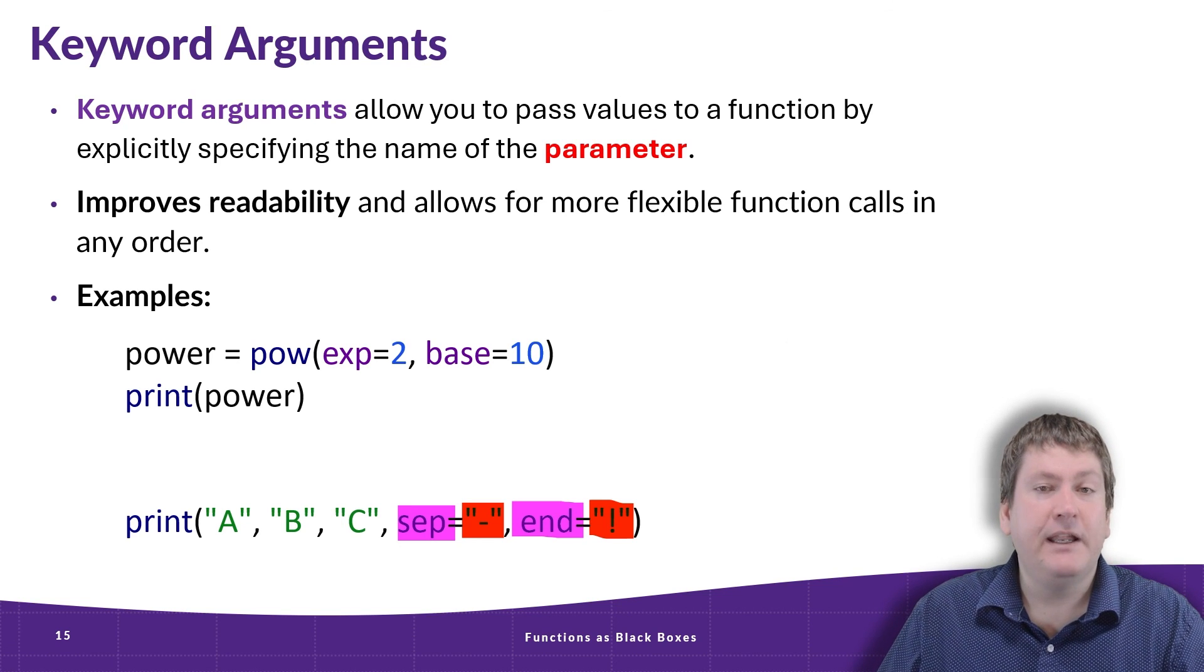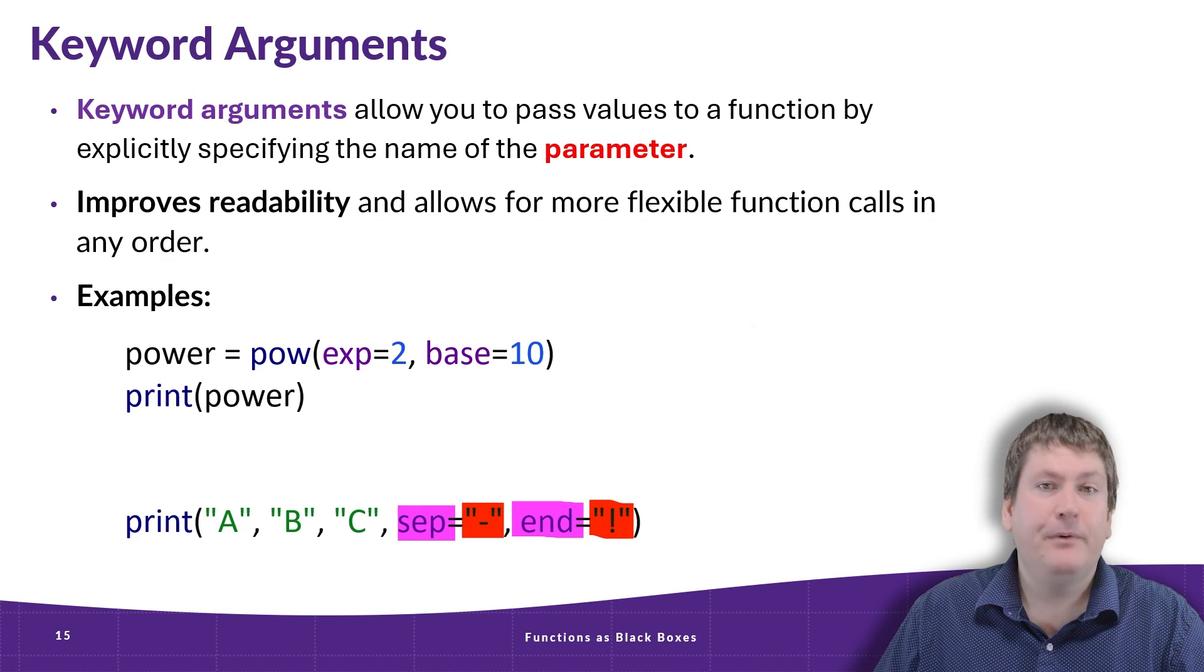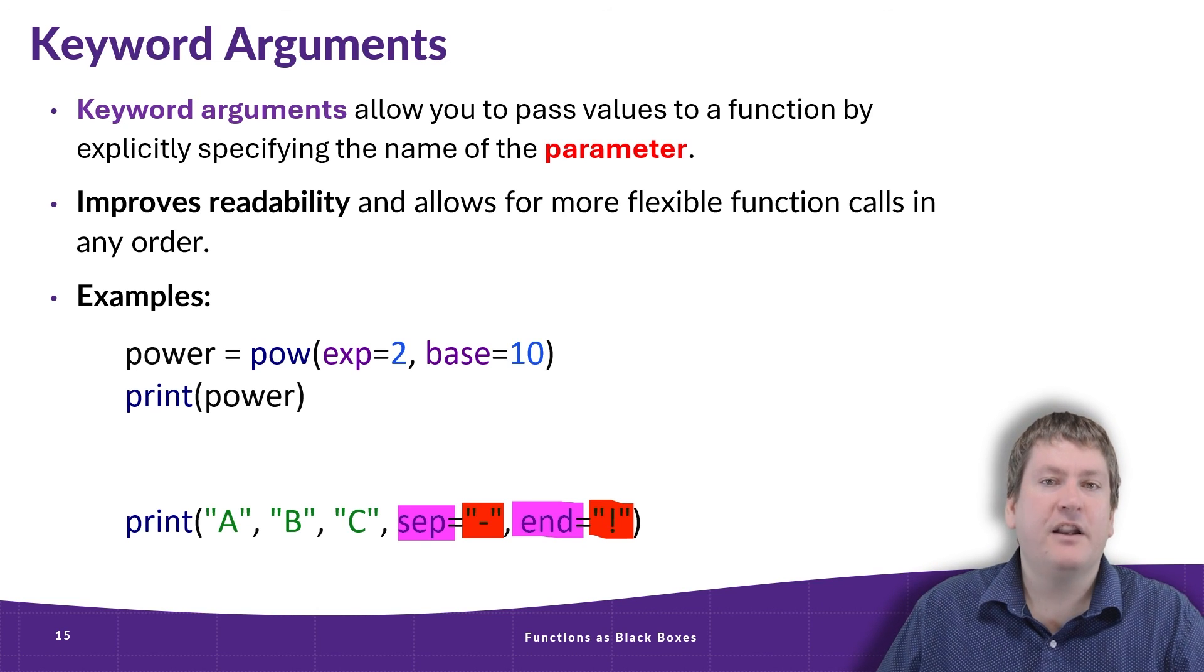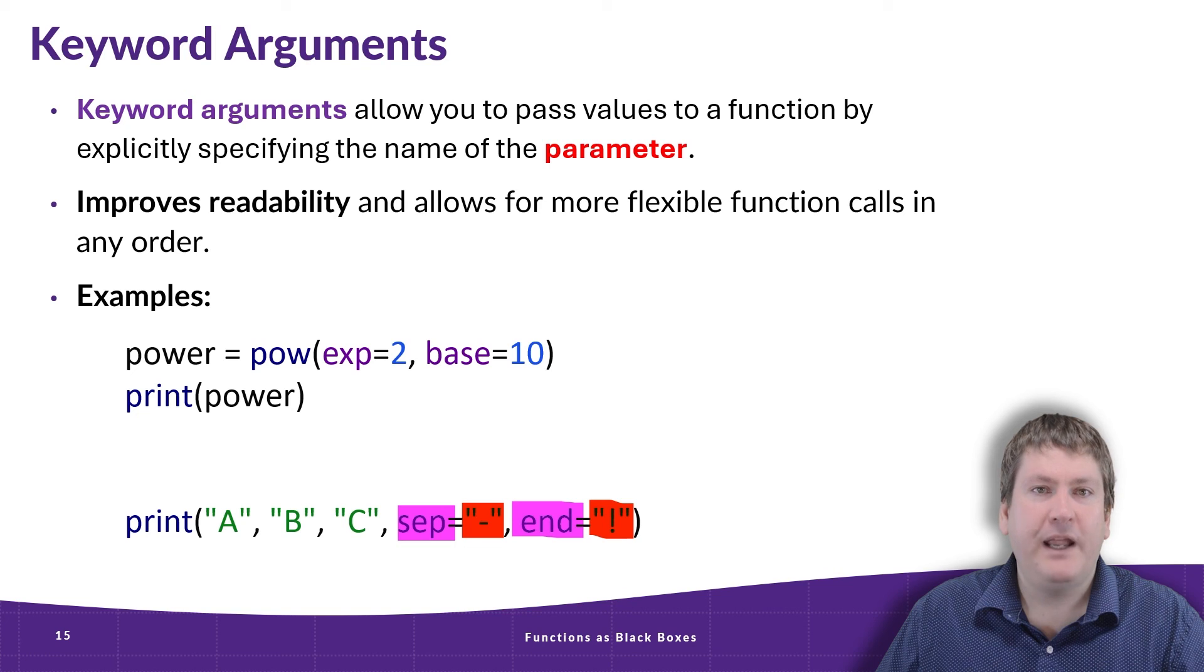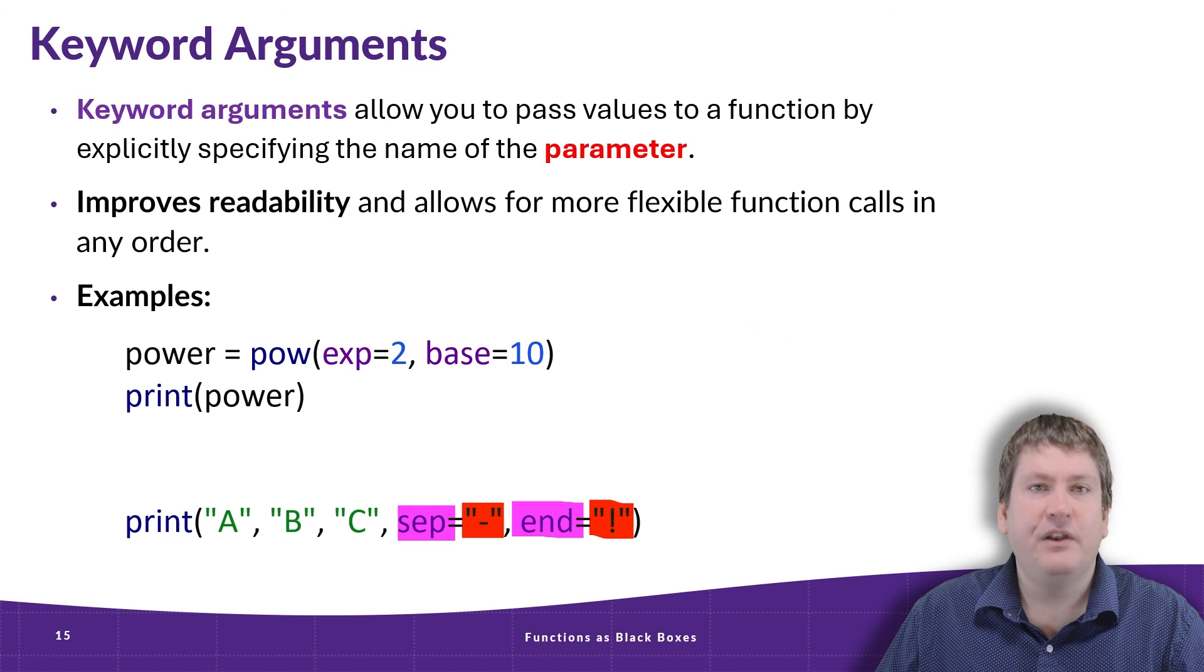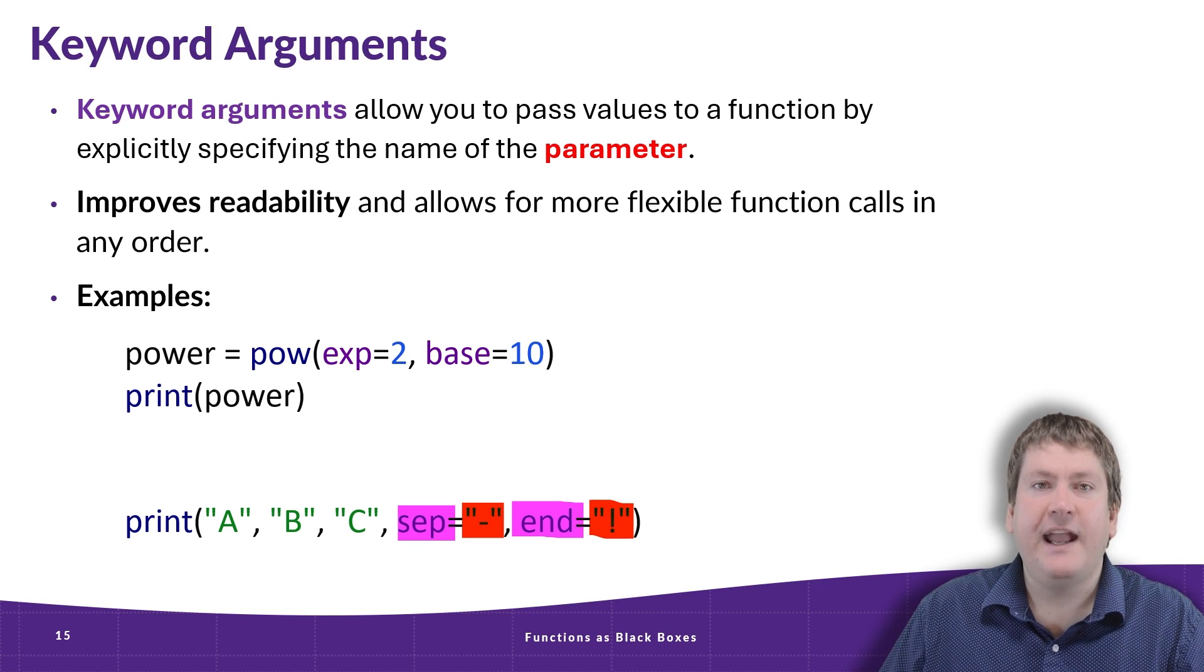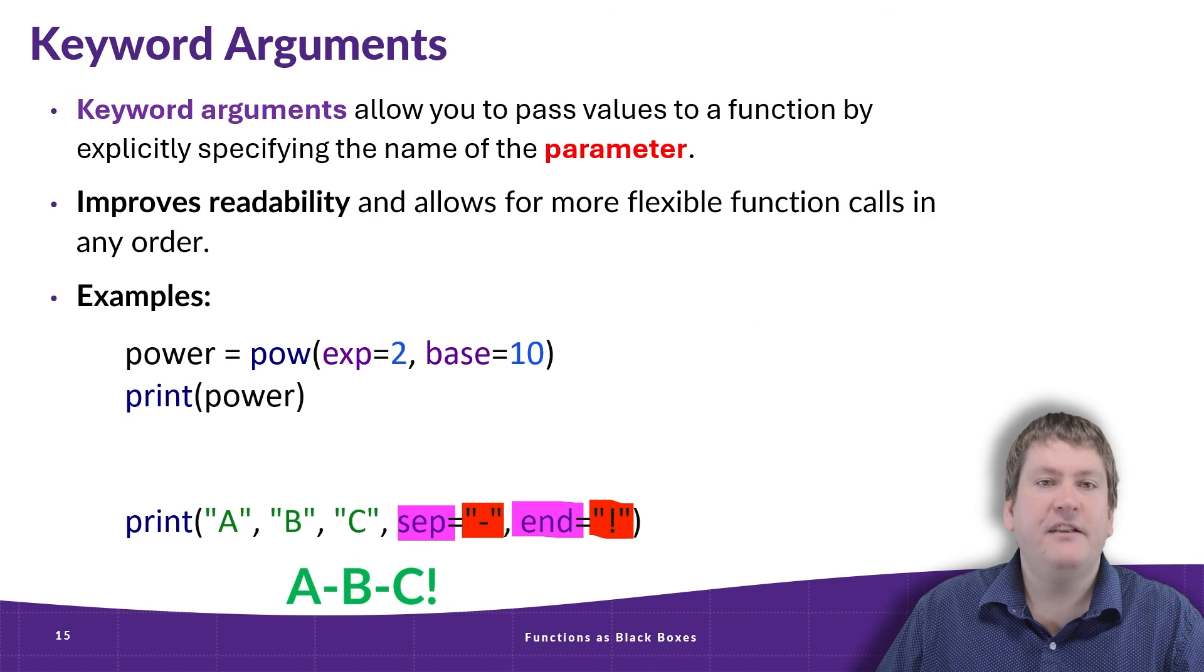By default, end would be equal to a line break, and sep or separator would be equal to a space. By using keyword arguments here, we can change that default behavior. And this is another common use for keyword arguments: to give values to parameters that already have a default set.